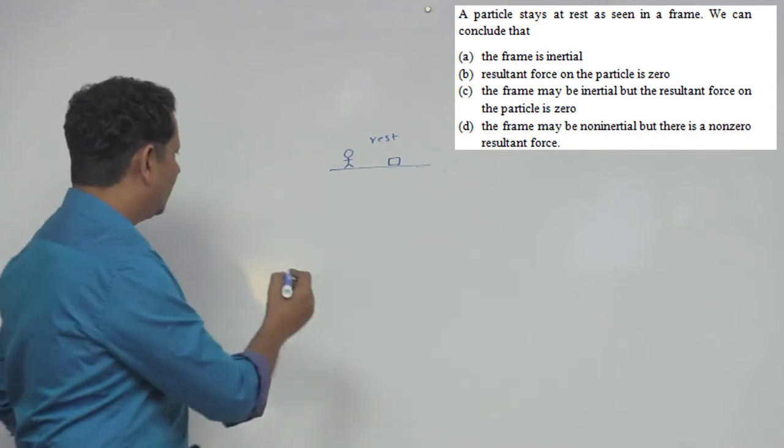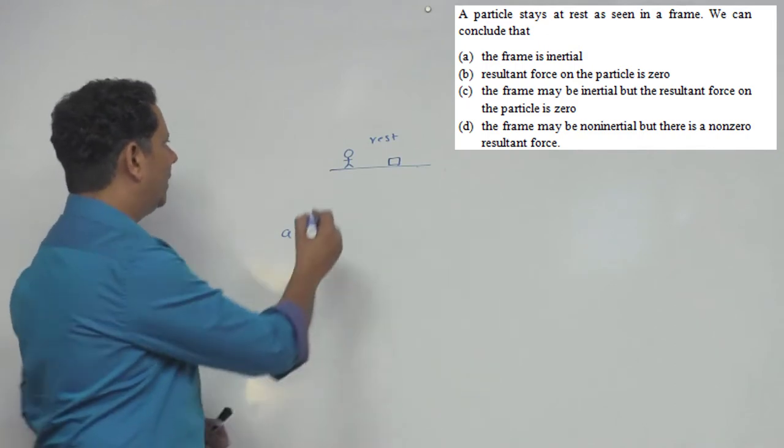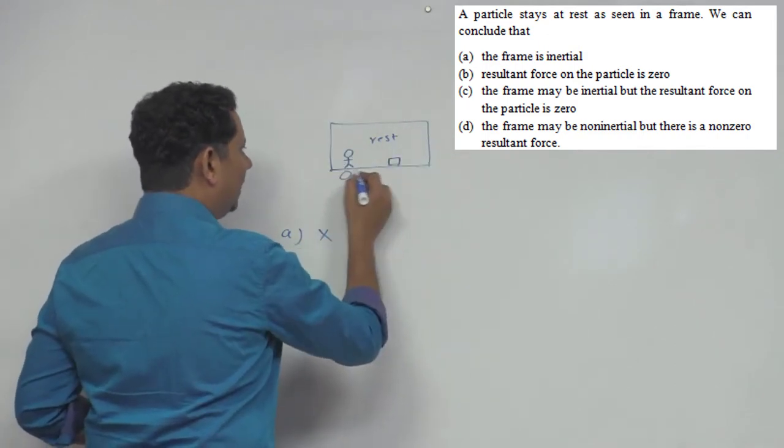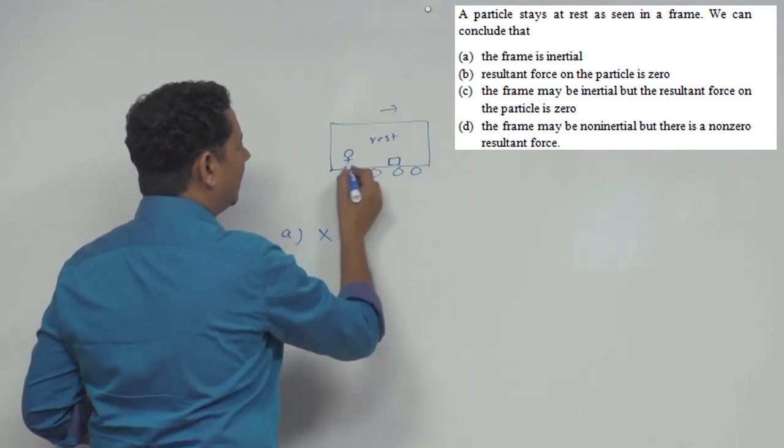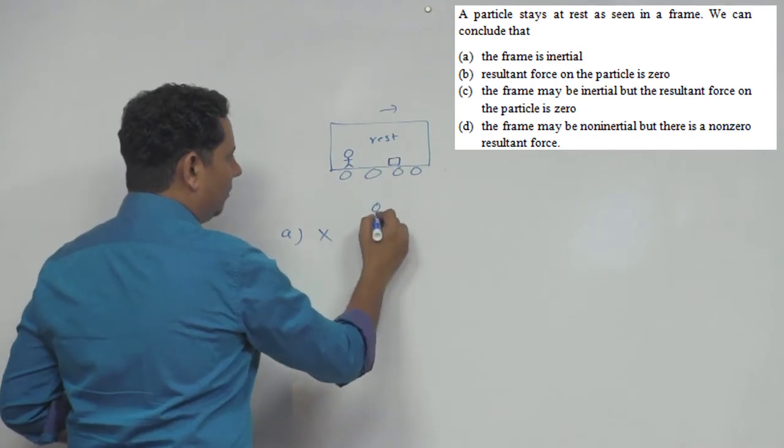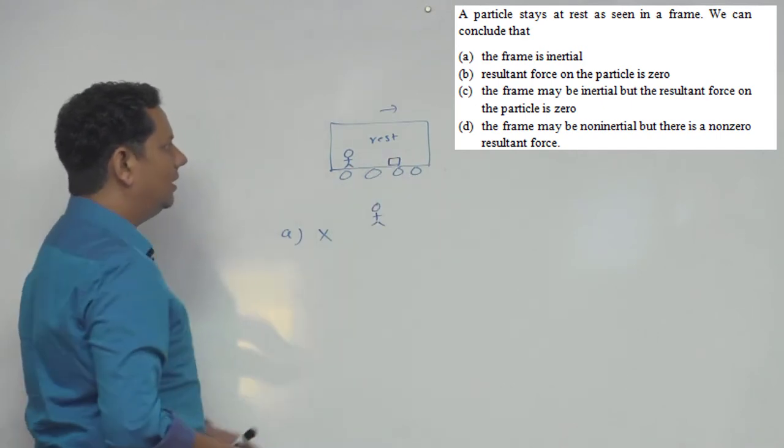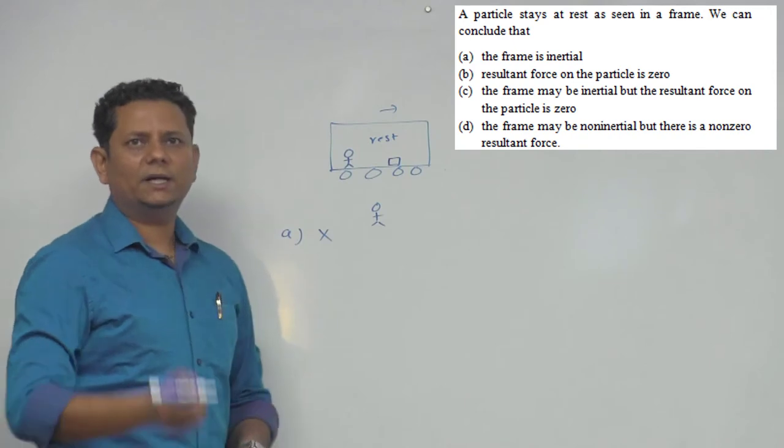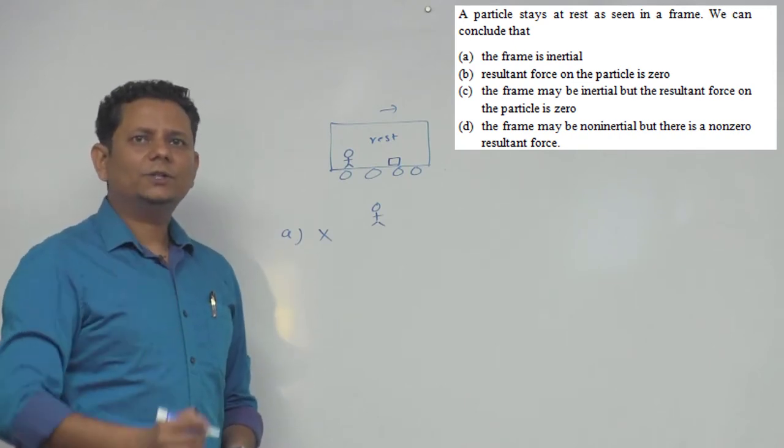It's not necessary that the frame is inertial. There's also a possibility that your train is moving like this, and if you're looking from the ground, then this is not inertial. But with respect to this it's at rest. So option A is not the right answer.